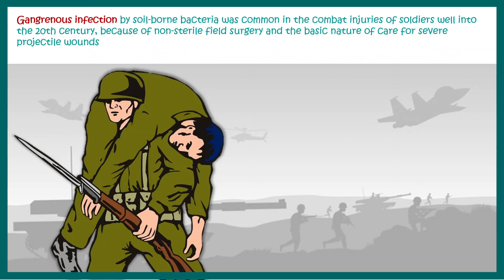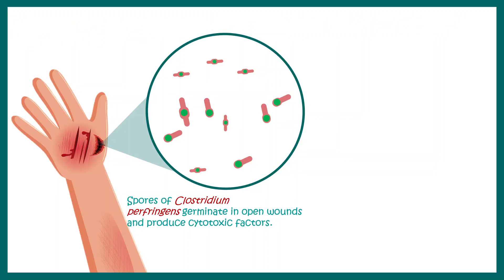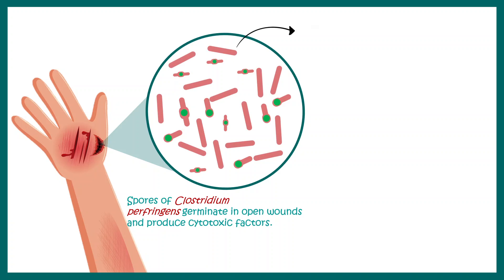This was pretty common in the early 20th century, where on the battleground, surgeries were done in a non-sterile situation. That led to invasion of these bacteria in the wound, causing gas gangrene. The spores of Clostridium perfringens can germinate in an open wound and can produce cytotoxic factors such as alpha-toxin and theta-toxin.